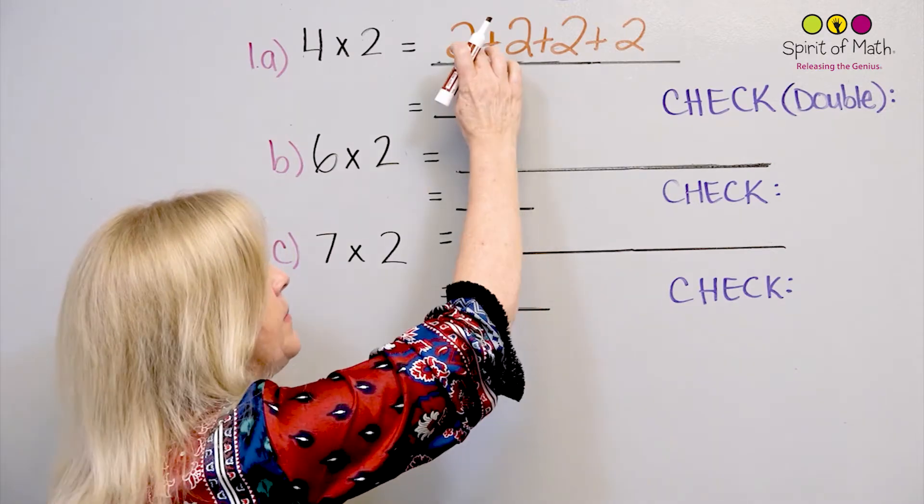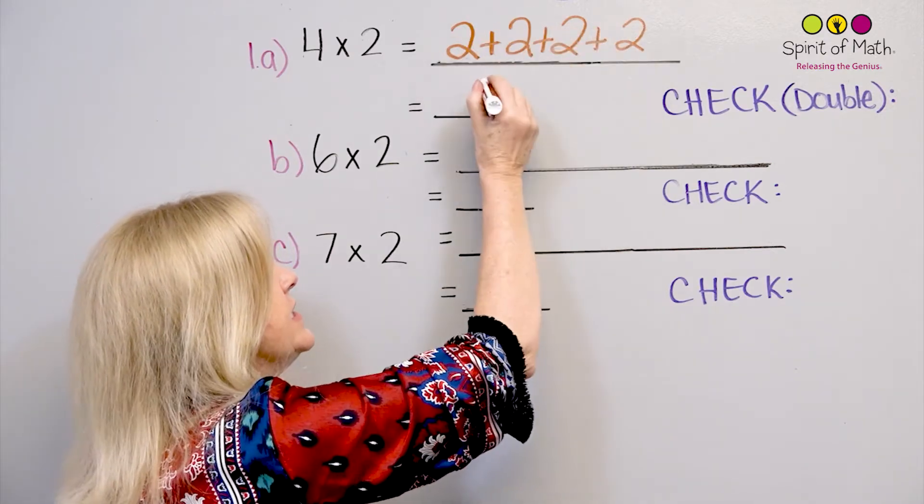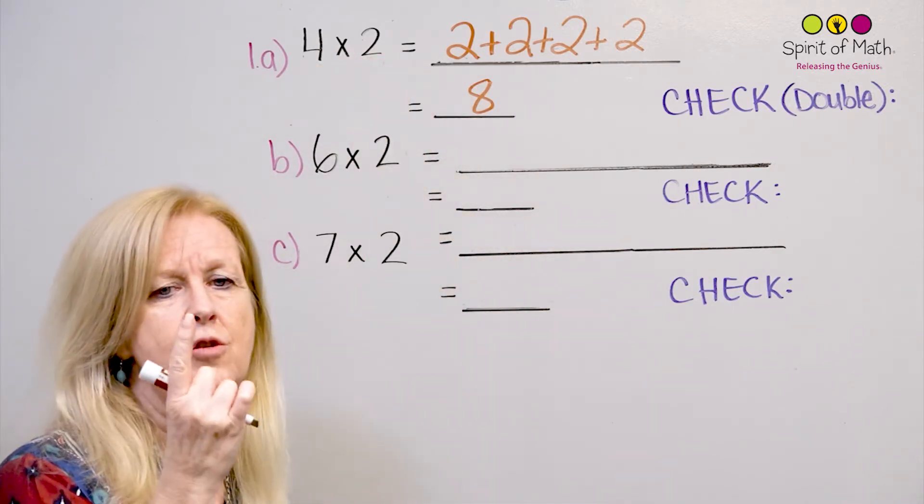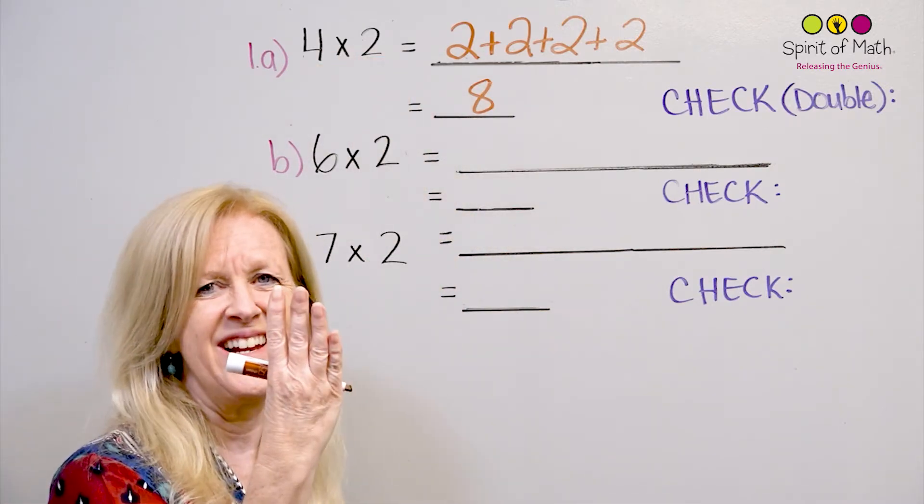And all together, that makes 2, 4, 6, 8. So 4 groups of 2 is the same as saying 2, 4, 6, 8. There you go. Okay?